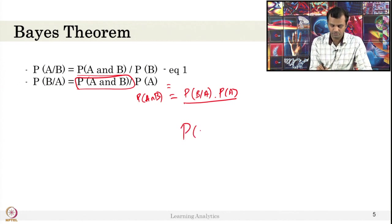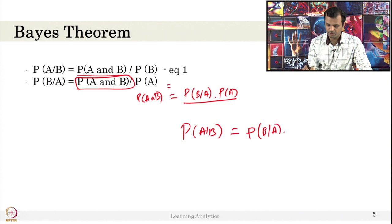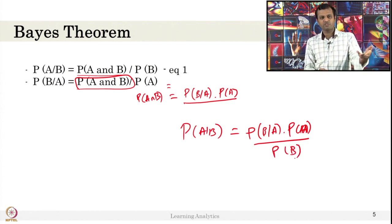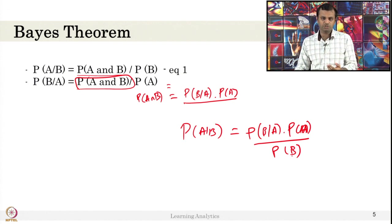So, probability of A given B equals: this P of A and B can be replaced by probability of B given A into probability of A, divided by P of B. That is the Bayes theorem — a simple Bayes theorem. This is the Bayes theorem, and you have the naive assumption on it that we can use as a Naive Bayes classifier.